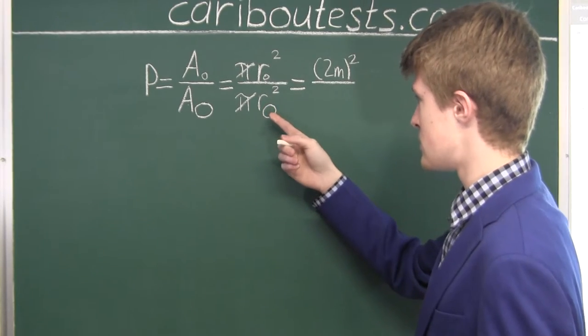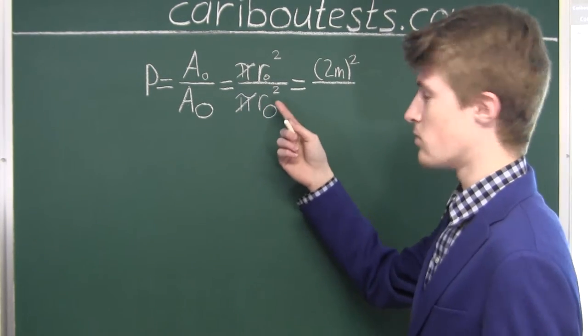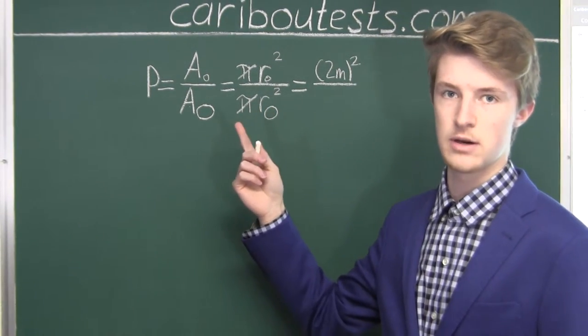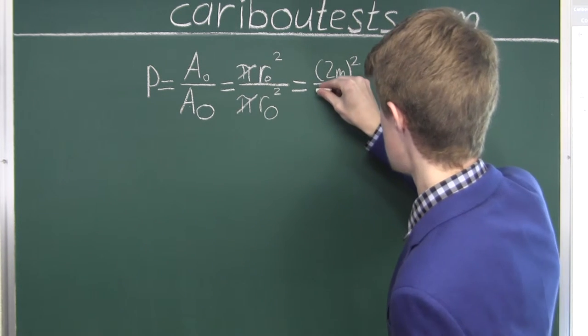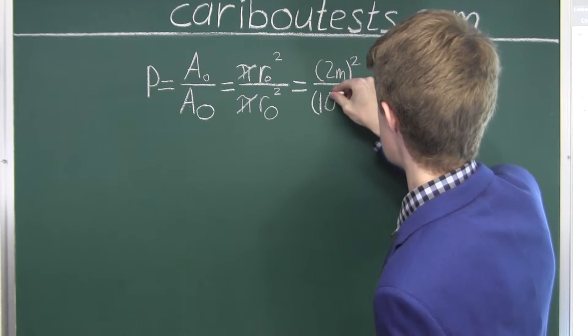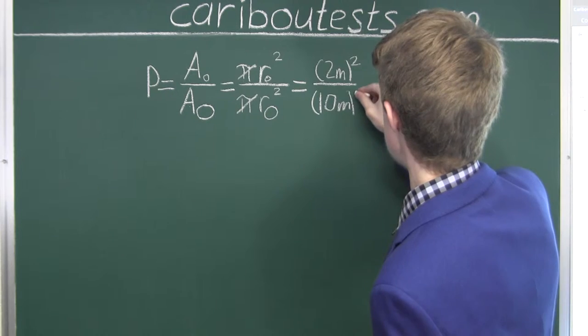And for the large, the radius of that circular green, we know is 10 meters also from the question. So we have 10 meters squared.